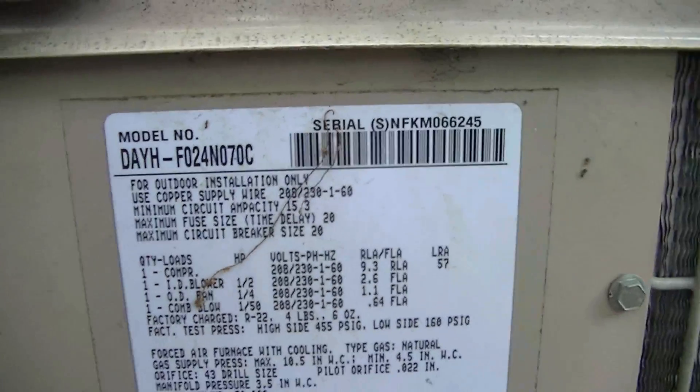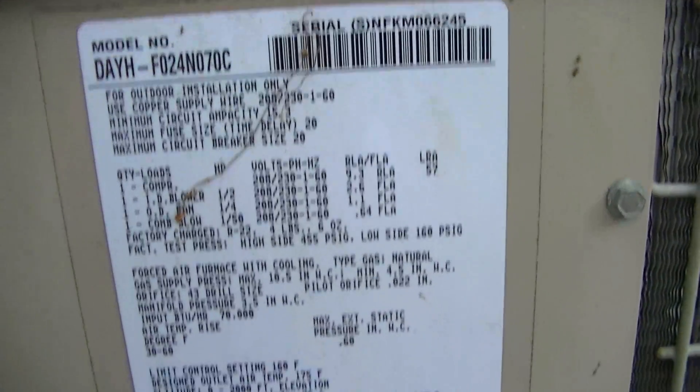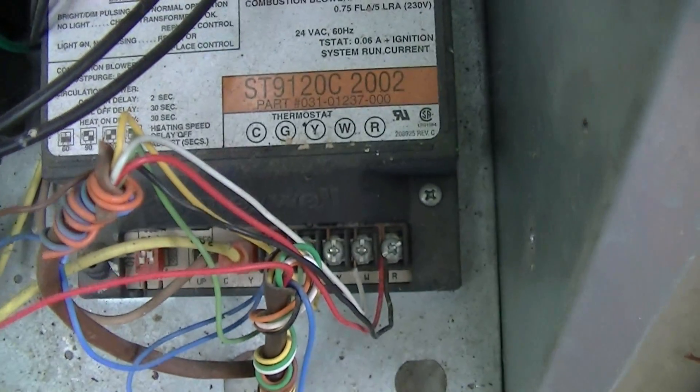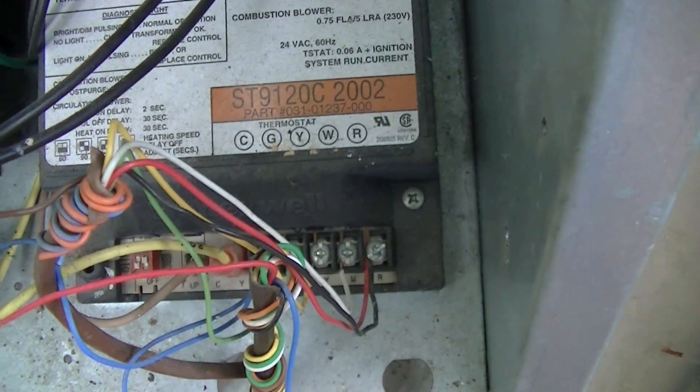Here's our York System package unit, a little bit over 10 years old I think. I'm going to go ahead and open up our panel here and take a look at our old controller. This is our old ignition controller, ST-91-20C 2002. And it just wasn't doing its job, so it's got to go.